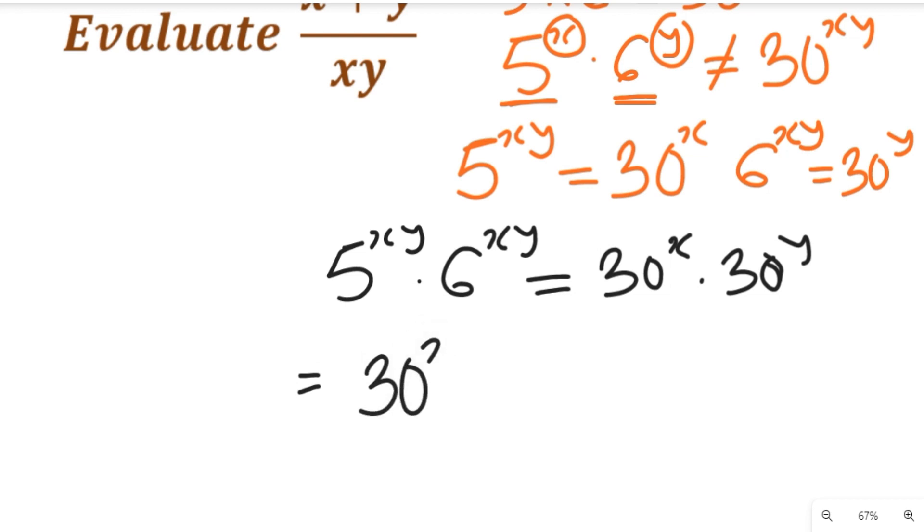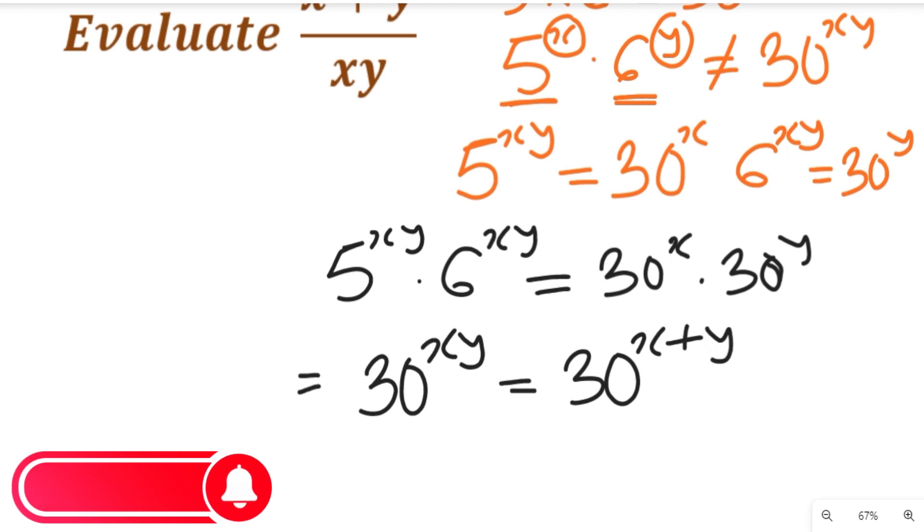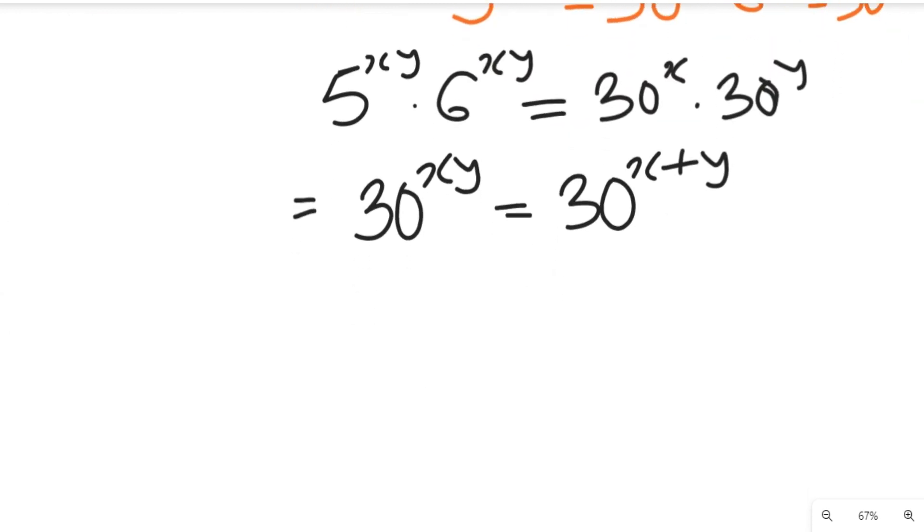If we multiply this, we are going to have 5 times 6, which will give us 30 to the power of xy, equal to 30 to the power of x plus y. Remember the law of indices: once you have the same base, you add the power. That's exactly what we did here.